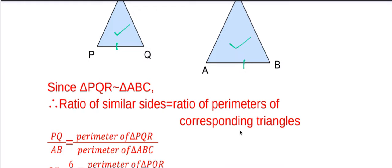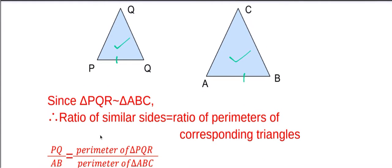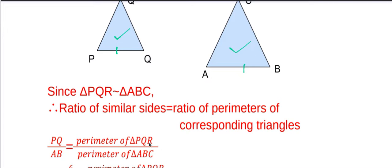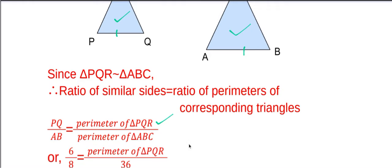Therefore, PQ divided by AB will be equal to - PQ is side of triangle PQR - so it will be equal to perimeter of triangle PQR divided by perimeter of triangle ABC.